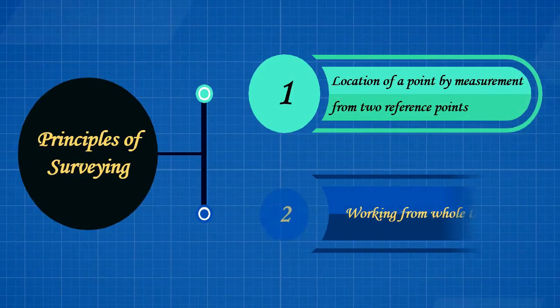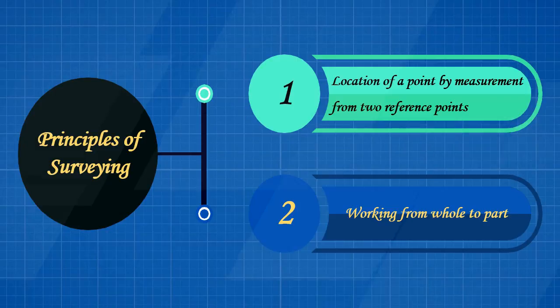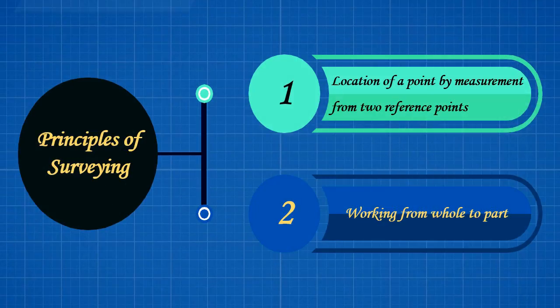The two fundamental principles of surveying are: Location of a point by measurement from two reference points, and Working from whole to part.